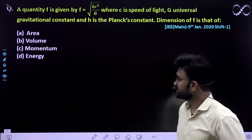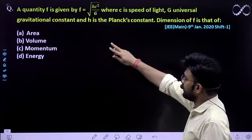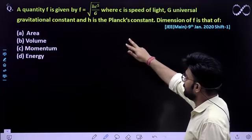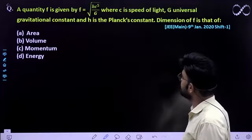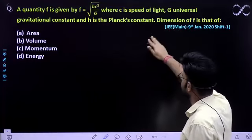So, 2020 ka question hai, jaldi se dekho question kya kehta hai. Dimensional analysis ka question hai. A quantity F is given by F = √(hc²/G), where c is the speed of light, G is the universal gravitational constant and h is the Planck's constant.